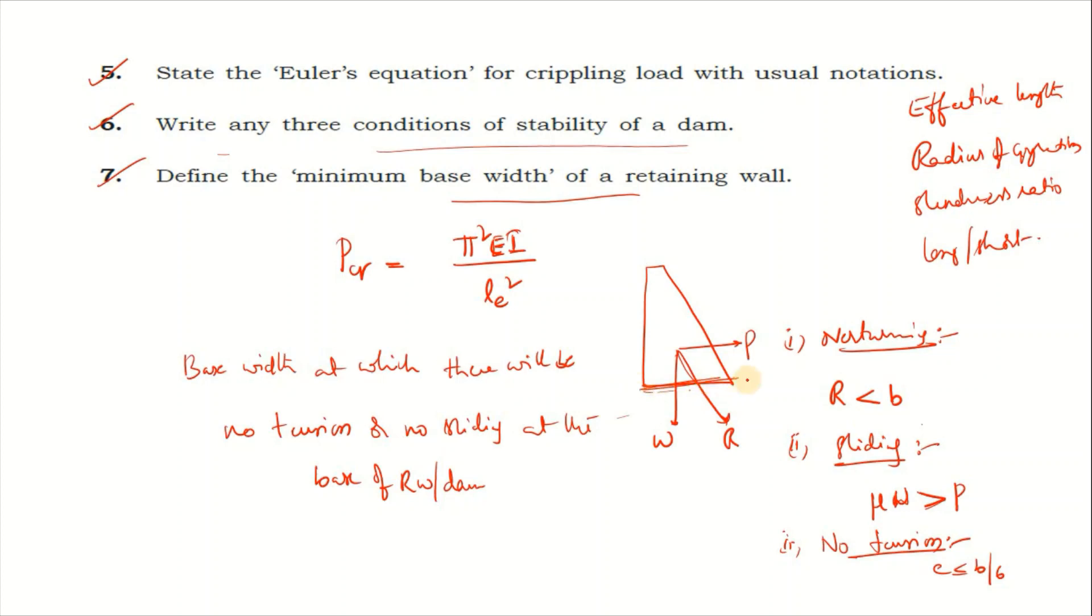At which there will be no tension or sliding at the base of the retaining wall or dam. Dam and retaining wall base tension and sliding require minimum width.